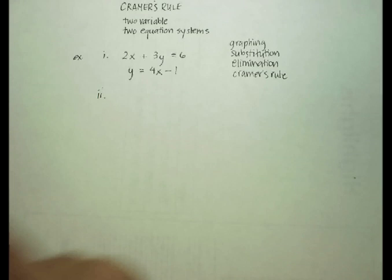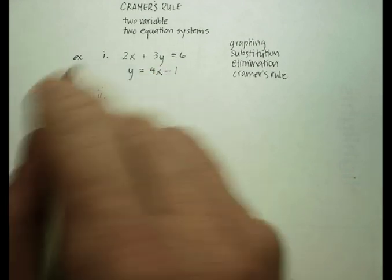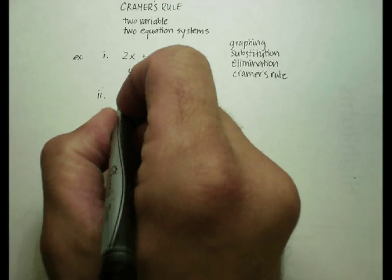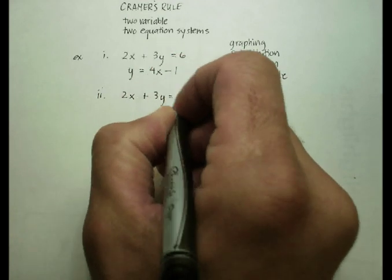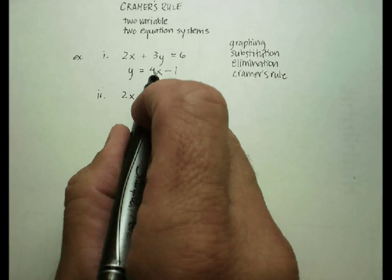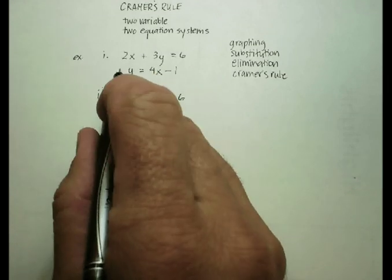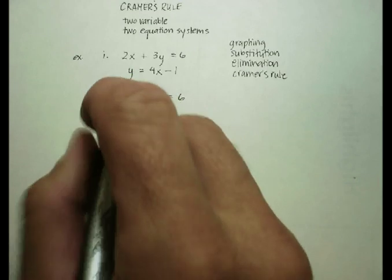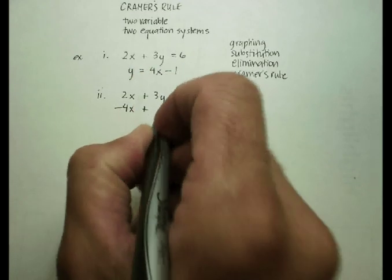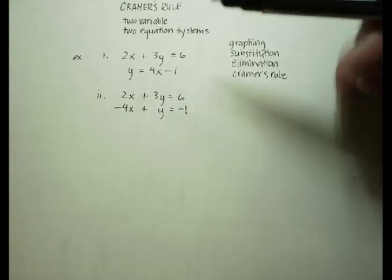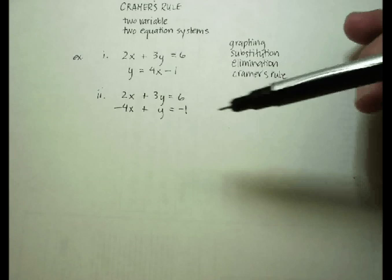When I see a system of equations like this, I want to line everything up in standard form. Get the x's and the y's on the same side. So I'm just going to rewrite the first equation, and I'm going to rewrite the second equation using the standard form. So I'm going to put the negative 4x over here by subtracting it from both sides. And now everything's lined up. I've got all the x's together, all the y's together, and all the numbers together.